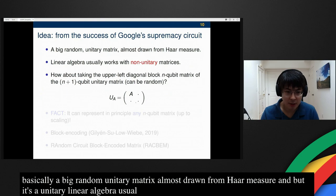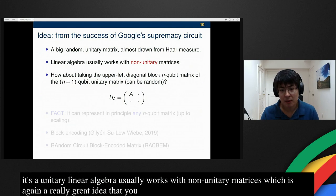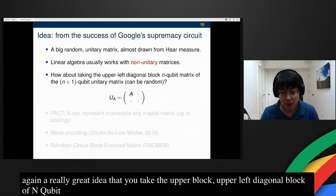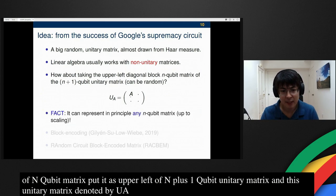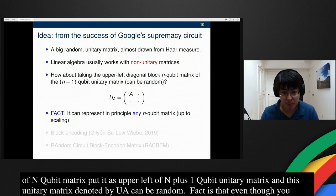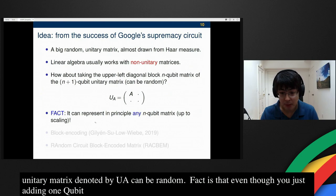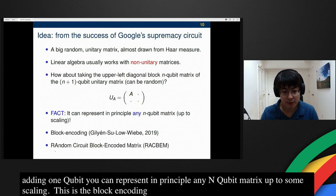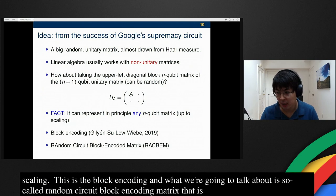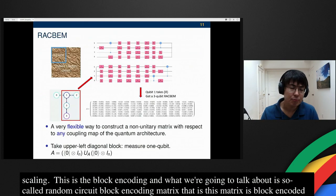Linear algebra usually works with non-unitary matrices, which have just heard the block encoding. Let me say it again, which I think is a really great idea, that you take the upper left diagonal block of n qubit matrix. You put it as an upper left diagonal block of n plus 1 qubit unitary matrix. This unitary matrix, denoted by UA, can be random. The fact is that even though you just added one n qubit, you can represent in principle any n qubit matrix up to some scaling. This is the block encoding, and what we're going to talk about today is this so-called random circuit block encoding matrix, or RACBEM.